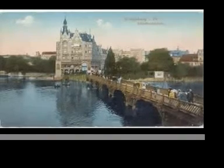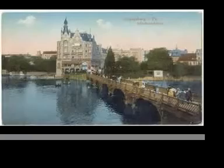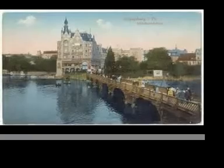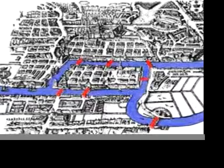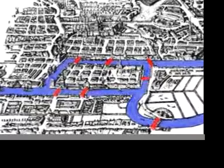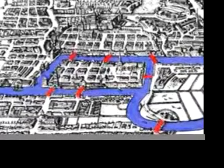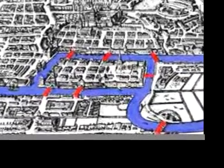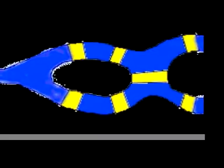Most people in Königsberg loved to take walks along the river and the island, and it had become a Sunday tradition to take the walk of the seven bridges. But some of the town's curious citizens wondered if it were possible to take a journey across all seven bridges without having to cross any bridge more than once.